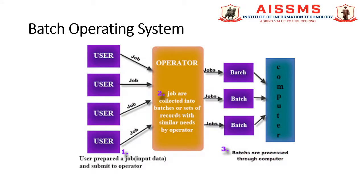The output is another batch that can be reused for computation. In this type of operating system, the user did not interact directly with the computer system. The user prepared a job using offline devices like punch card. The job consisted of a program, data and some control information about the nature of the job, and finally submitted to the computer operator.